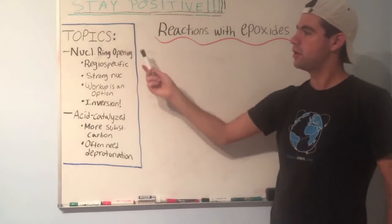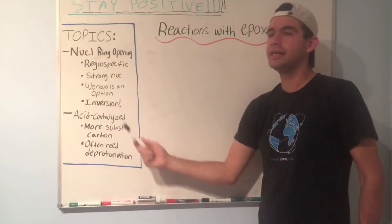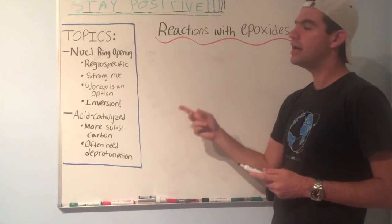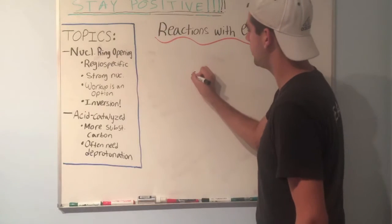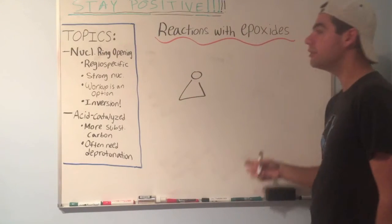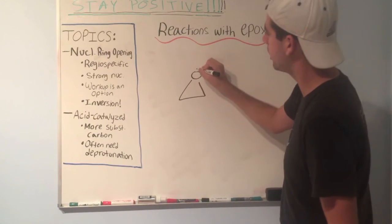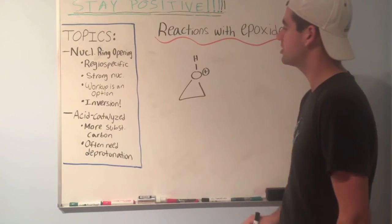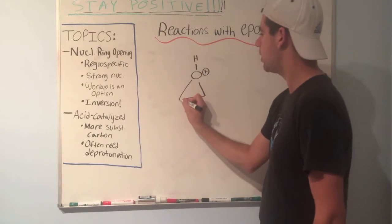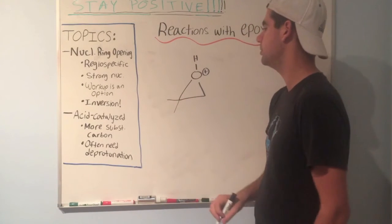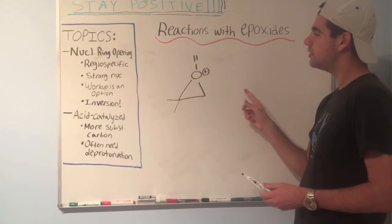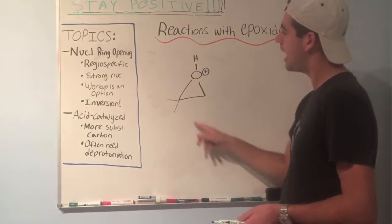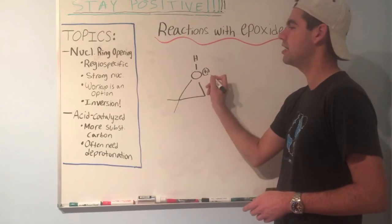Now let's talk about the second category: acid-catalyzed ring opening. In acid-catalyzed ring opening, you have your epoxide, and in the presence of acid, this oxygen becomes protonated, forming a positive formal charge. Now, instead of the nucleophile attacking the less-substituted carbon (as in nucleophilic ring opening), it'll attack the more substituted carbon — and that's because of this positive formal charge.